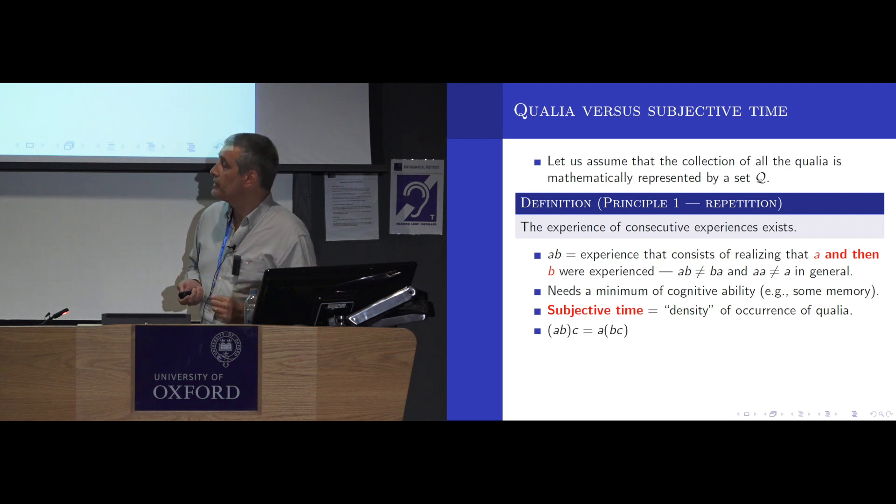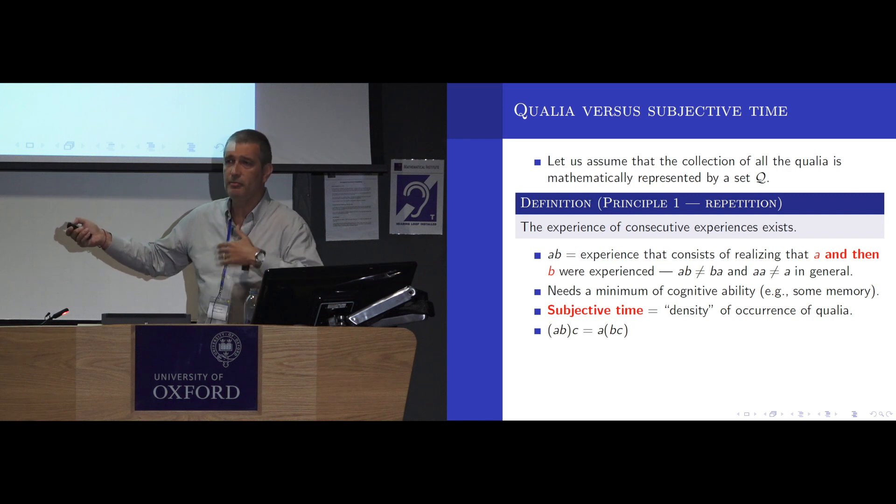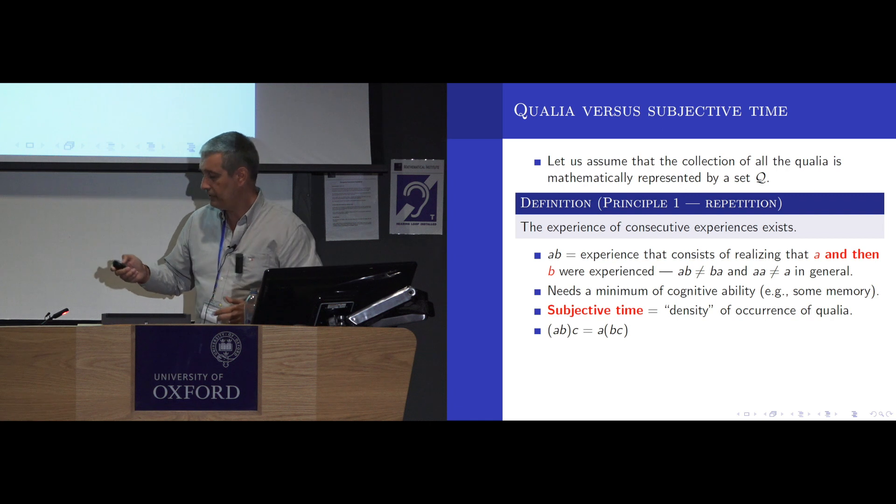At least it allows me to say that mathematically I want my multiplication to be associative. There's no reason to group qualia together if the only thing that happens after B is C. It doesn't matter that C happened two million years afterwards, it's the next thing, it's just immediately after.